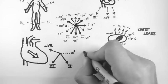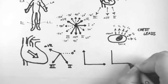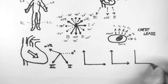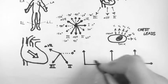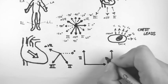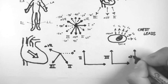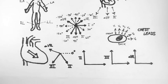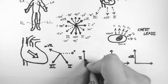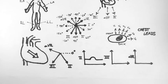So any depolarisation that occurs in the direction of a lead causes a wave on the graph which is positive in nature, that is, an upward deflection. So because lead 2 is roughly the same direction as the depolarisation, the wave on the graph will look like this.